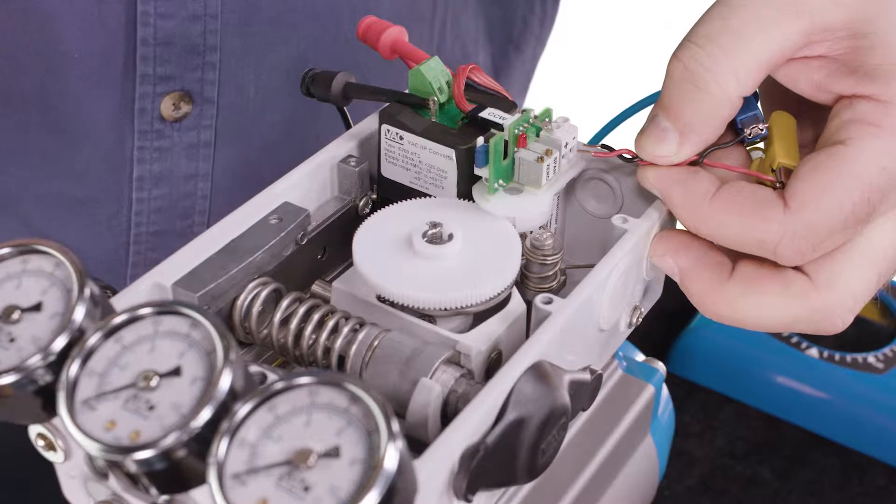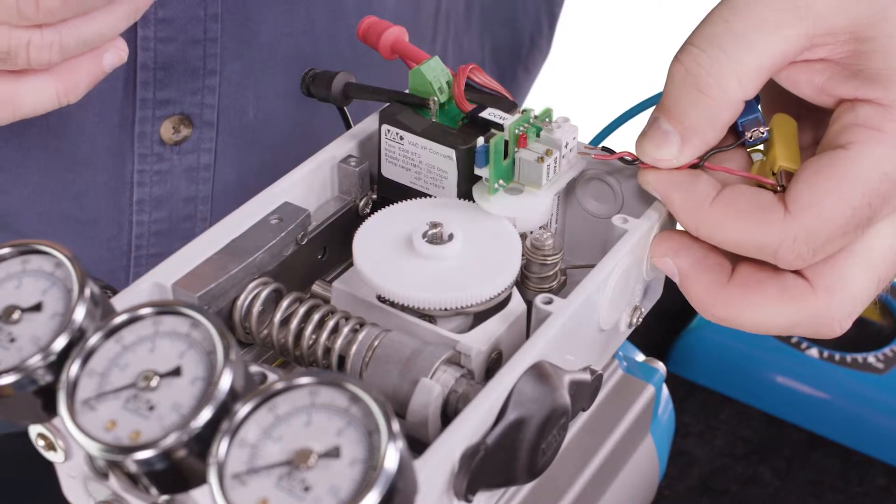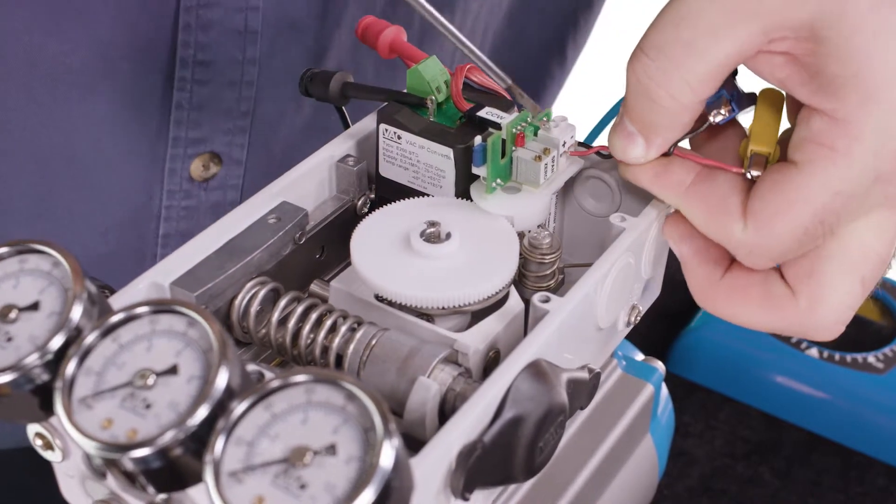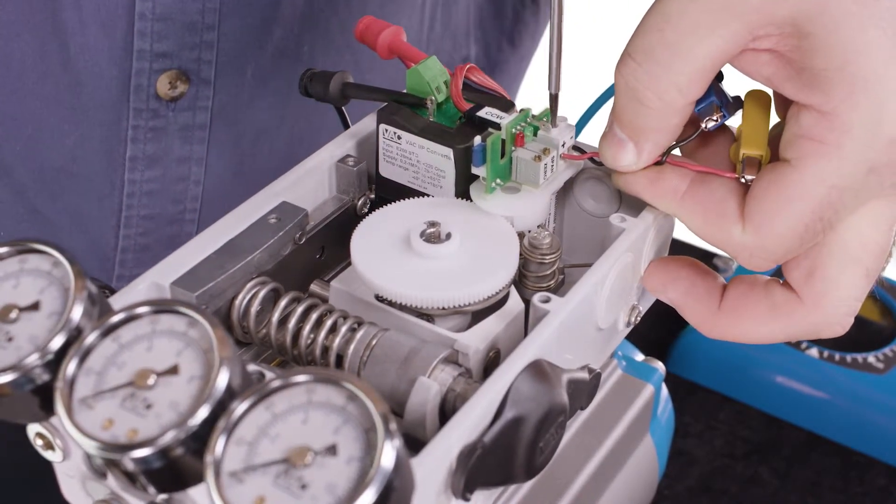Connect your loop calibrator to the module's terminal strip and turn it on. This is loop-powered feedback, so remember your calibrator must provide 24-volt DC power, as well as be able to read the feedback.